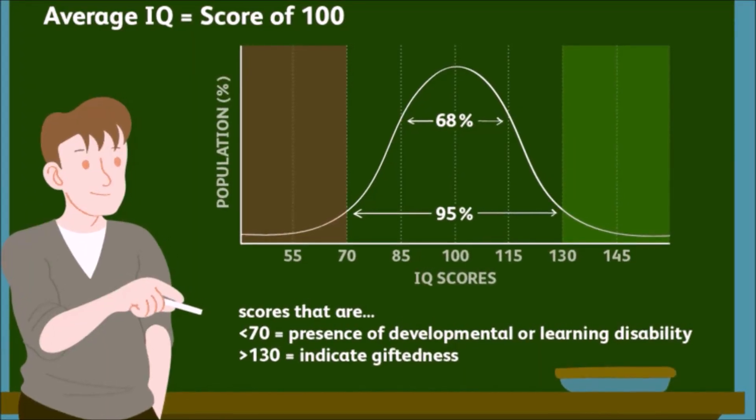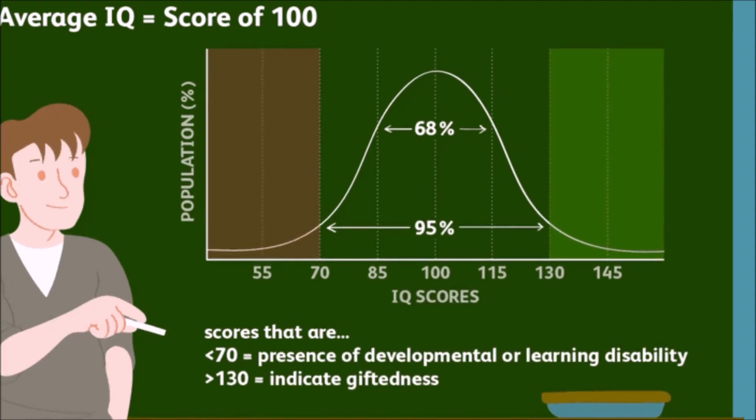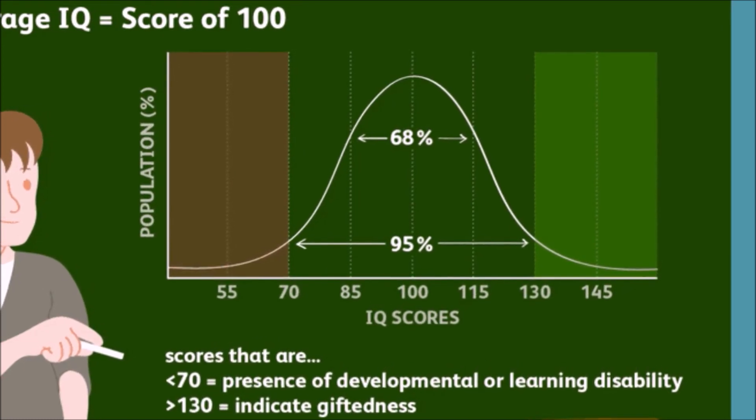When psychometricians developed our current IQ tests, they defined the median raw score of the norming sample as IQ 100, and defined each standard deviation up or down as 15 IQ points greater or less. By this definition, approximately two-thirds of the population scores are between IQ 85 and IQ 115. About 2.5% of the population scores above 130 and 2.5% below 70. Keep in mind, though, that scores from intelligence tests are estimates of intelligence, because we can't get a concrete measure of intelligence given the abstract nature of the concept.